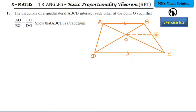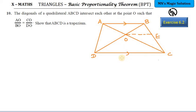By construction OE is parallel to DC. We already have the given condition: AO by OC equals BO by OD. Applying BPT in triangle BDC with OE parallel to DC gives BO by OD equals BE by EC. From these two statements, AO by OC equals BE by EC. Since the ratios are the same, by converse of BPT we have OE parallel to AB. Since OE is parallel to DC by construction and OE is also parallel to AB, therefore AB is parallel to DC, and thus ABCD is a trapezium.